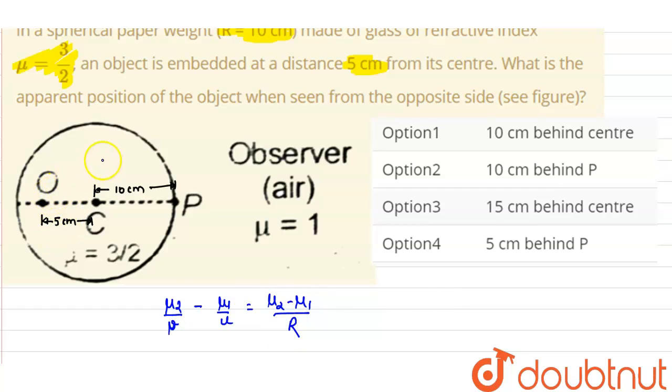Now since the object is inside, the ray will go from the inner of the paper weight. So this is 1 and this is 2. So this will be μ₂ and this will be μ₁.